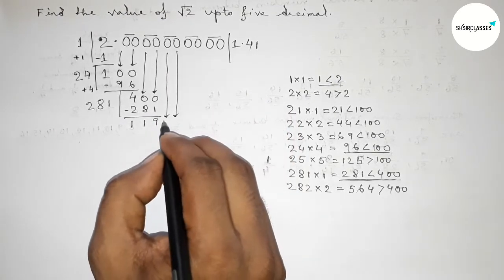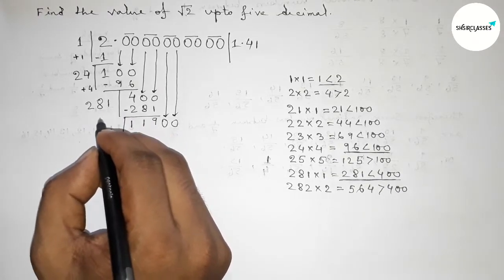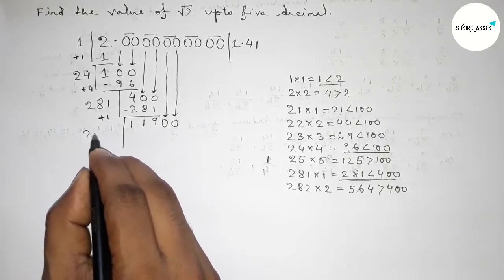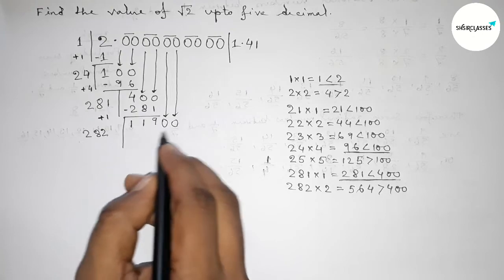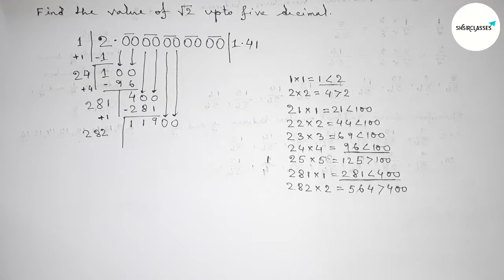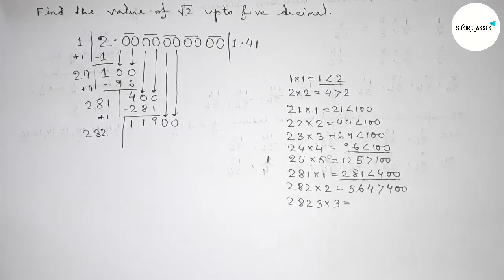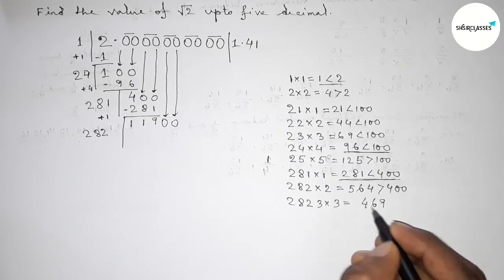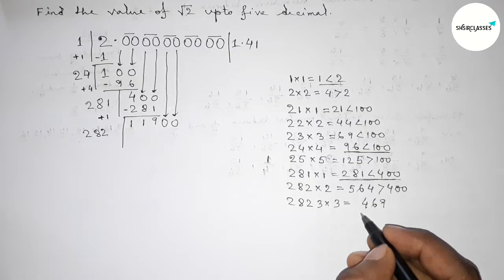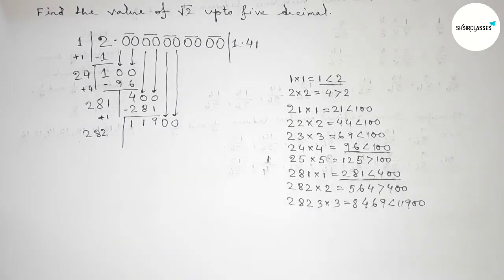Bring down the next pair of zeros, giving us 11900. Draw the division line. The last digit is 1, so add 1+1=2; divisor becomes 282. We try a digit beside 282: if we put 3, then 2823×3=8469, which is less than 11900. If we put 4, then 2824×4 — let's compute that.